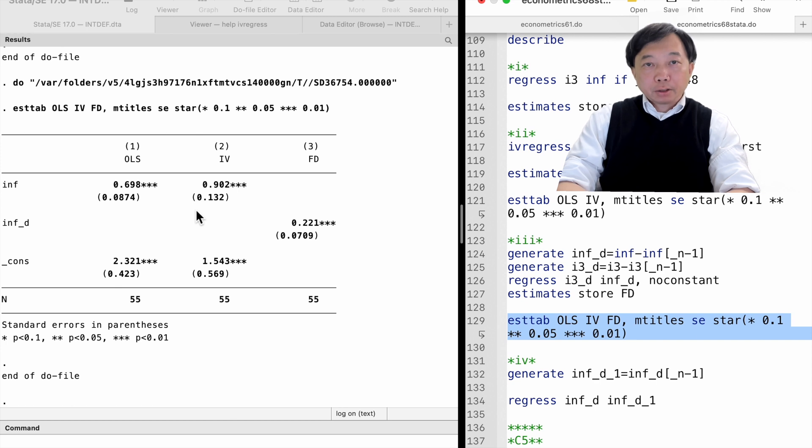We know that the instrumental variables estimation and the first differencing estimation are methods to deal with the omitted variable bias in the OLS estimate. Now, the instrumental variables estimate is larger than the OLS estimate, but the first differencing estimate is smaller than the OLS estimate. It implies that some omitted variables in the error term cause the OLS estimate to be upward biased and they are time constant.